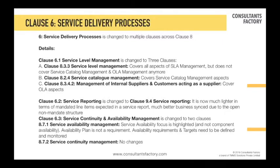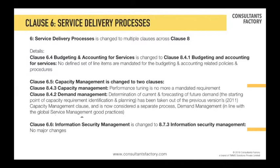Clause 6.3, service continuity and availability management, has been broken into two parts: service availability management and service continuity. Service continuity has not changed. However, service availability has gone through a considerable change: the availability plan is no more a requirement. You don't need to create an availability plan as long as you are defining the requirements for availability, setting your availability targets, monitoring, and improving. No plan document is required — it is no more a requirement.